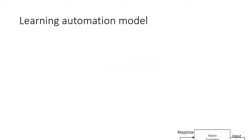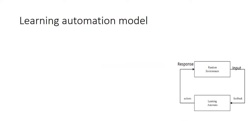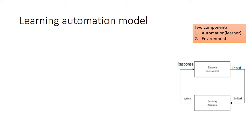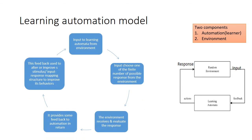The learning automata model consists of two components: one is the automaton, also called the learner, and the second one is the environment. The system gets input from the environment. The environment chooses one of a finite number of possible responses from the automaton, then receives and evaluates the response and provides some feedback to the automaton in return.